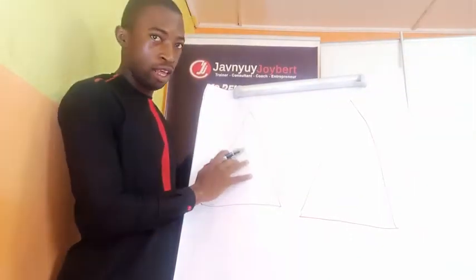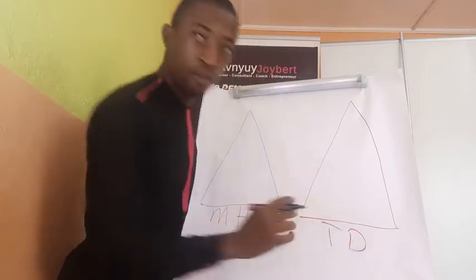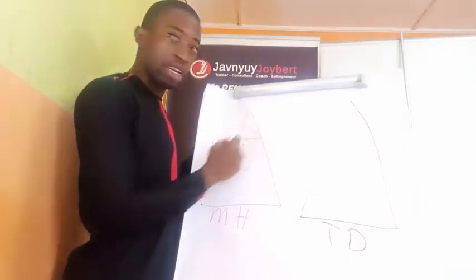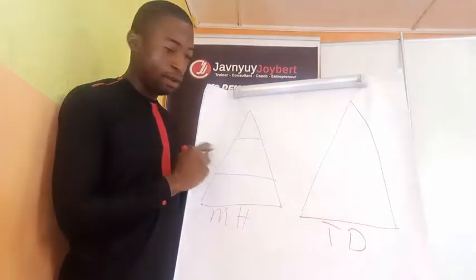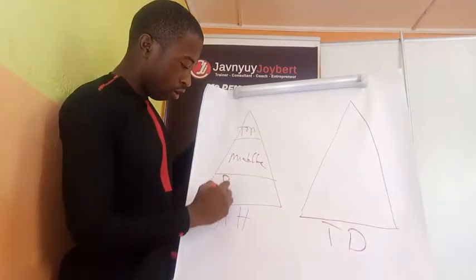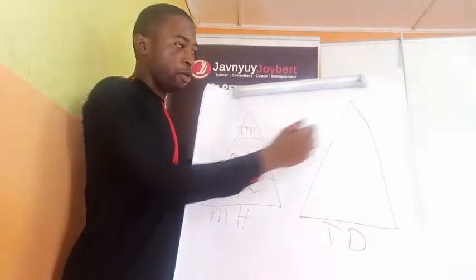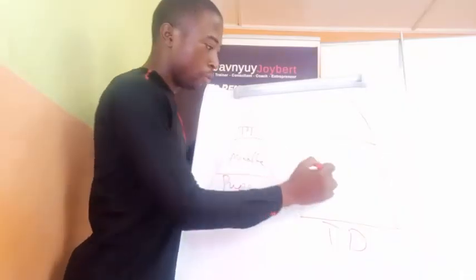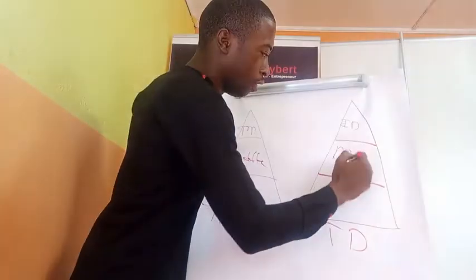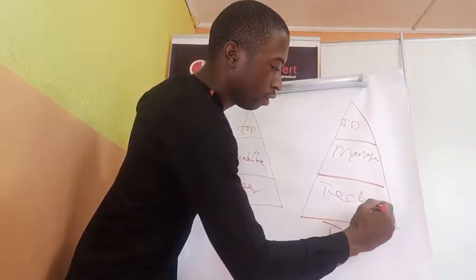Let's assume that this is management hierarchy and this is types of decisions. If you remember, we spoke about types of decisions just a few seconds ago. Now, let's break it down: top management, middle management, and supervisor. When we are talking about types of decision making, we spoke about three types: institutional decisions, managerial decisions, and technical decisions.